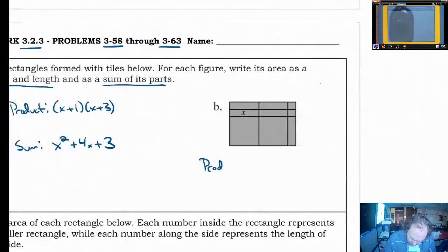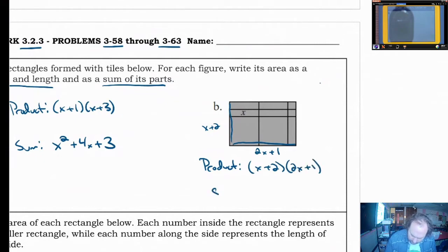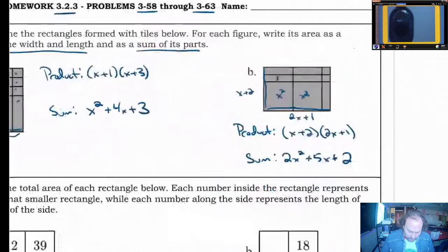That would be it for this one over here. Very similar. Again, just kind of practice-y problems. You have x plus 2 along this side, 2x plus 1 along this side. So that would be x plus 2 times 2x plus 1. And it does not matter what order those go in. For the sum, you have 2x squared, 5x's, and 2 tiles. 2x squared plus 5x plus 2. You can count those tiles up if you like.